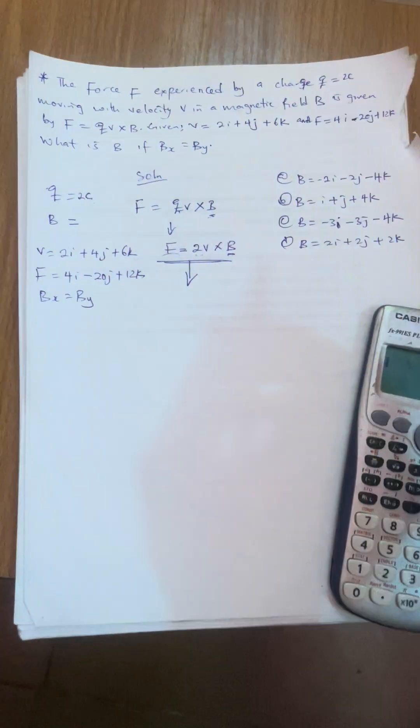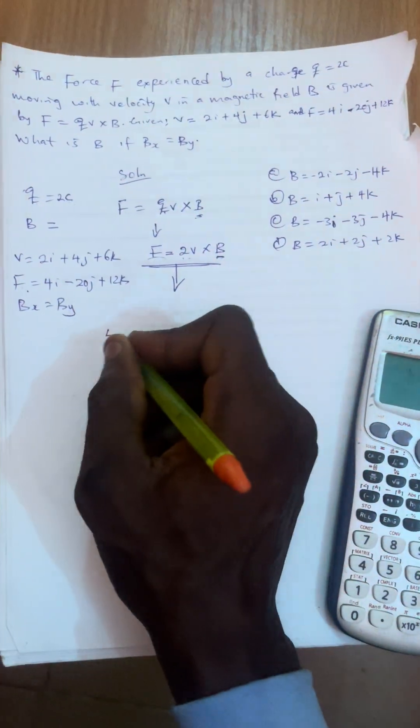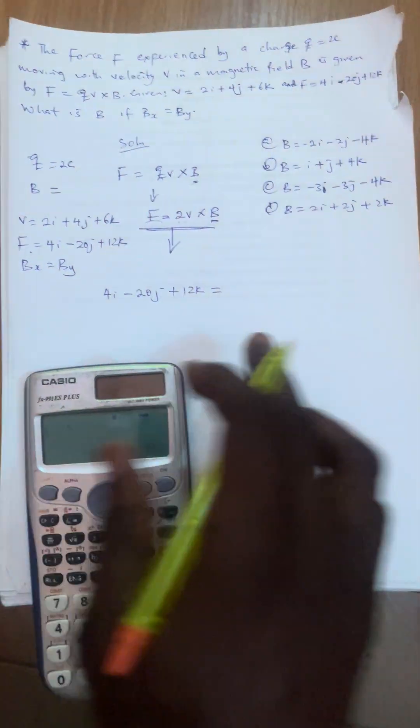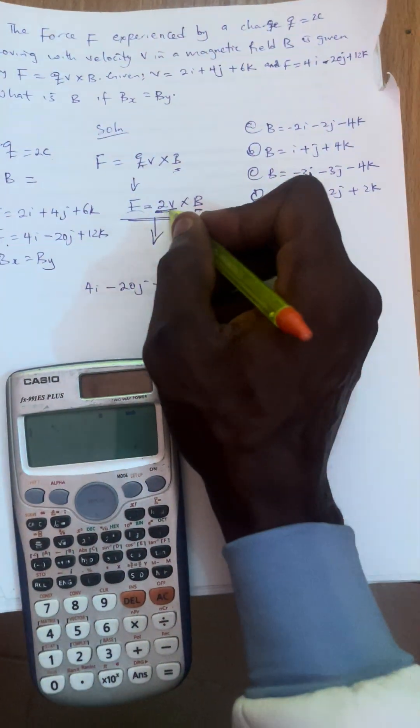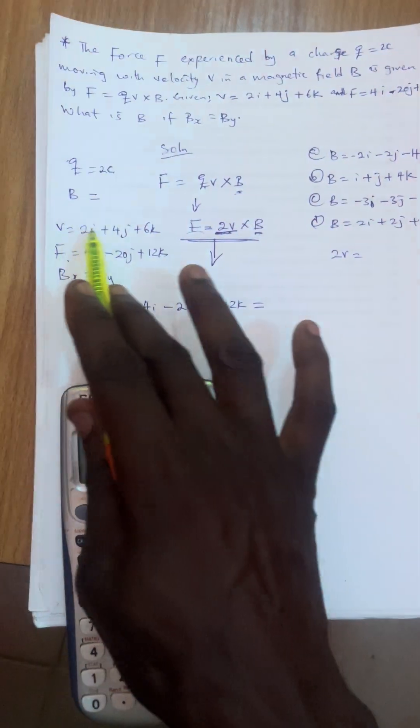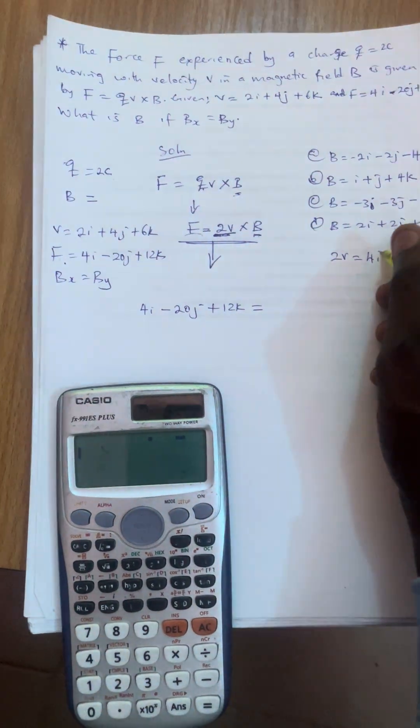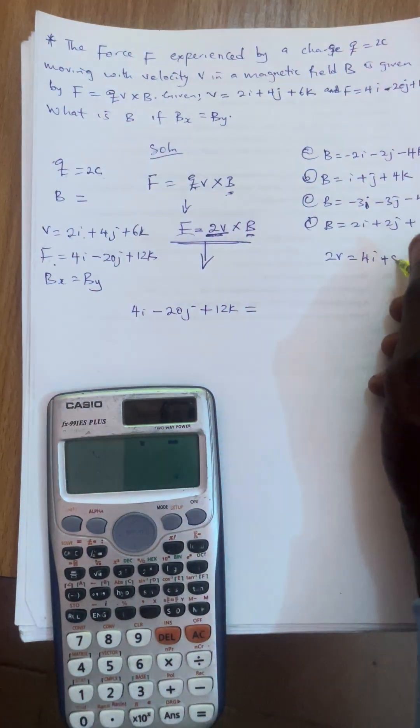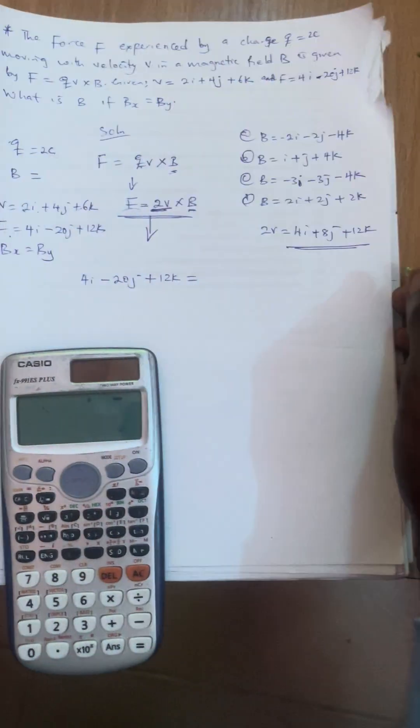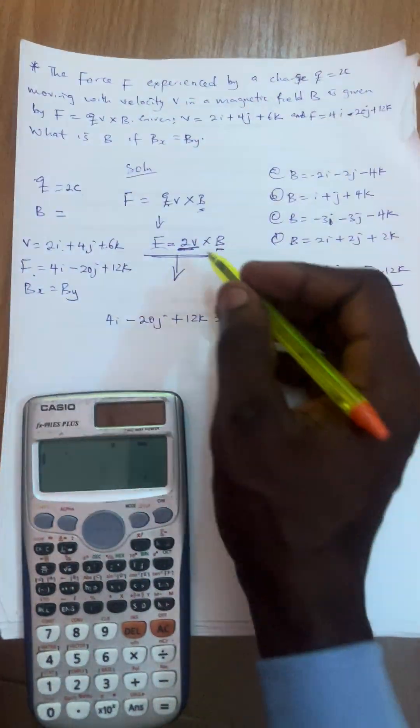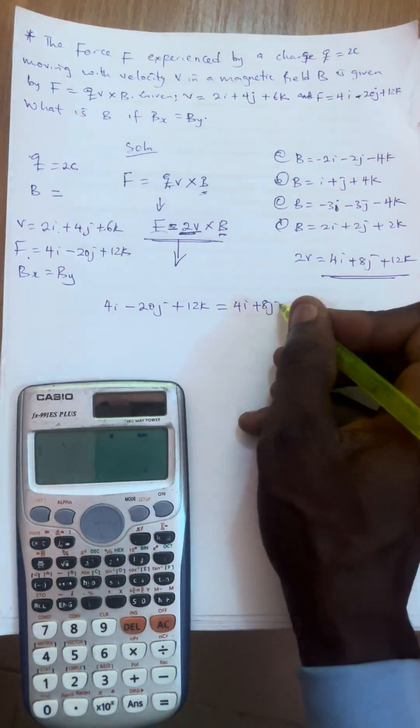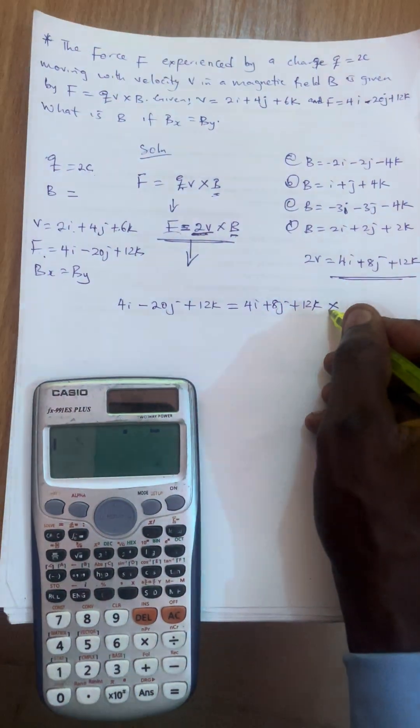F is equal to 2V. What is F in the question given to us? Don't forget, this is F. So our F is 4I minus 20J plus 12K is equal to our 2V. What would be 2V? 2V would be 2 times V. You multiply 2 with all this V. That means 2 times 2 here, that's 4, so that's 4I. 2 times 4, that's 8, that's plus 8J. 2 times 6, that's 12, plus 12K. Now you see, this is our 2V. Our 2V is 4I plus 8J plus 12K, then cross B.